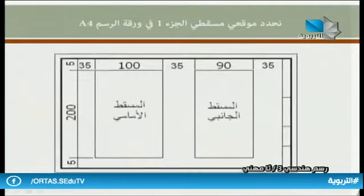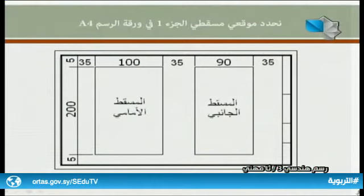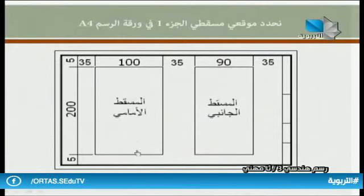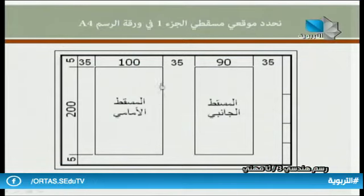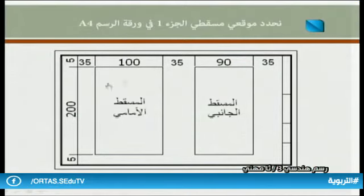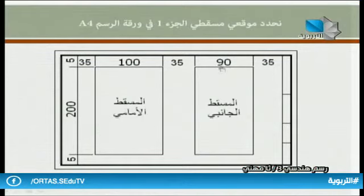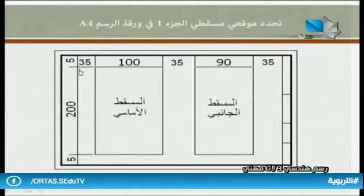في هذه المرحلة نحدد موقعي مسقطي الجزء رقم واحد في ورقة الرسم A4. علمنا من الرسم التجميعي أن المسقط الأمامي للجزء رقم واحد عرضه 100 مليمتر وارتفاعه 2 مليمتر، وفي المسقط الجانبي يكون العمق 90 مليمتر. ولوحة الرسم معلومة الطول والعرض، فنحسب الفراغات الواقعة بين المساقط.